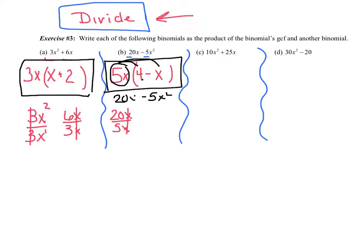Now, how do you know if you're right? Well, you should be able to distribute this back through and get what you started with. 5x times 4 is 20x minus 5x squared, and that's exactly what I started with. All right, well, I'm going to pause it, and why don't you pause it as well and try the next two on your own, see if we get the same answer.